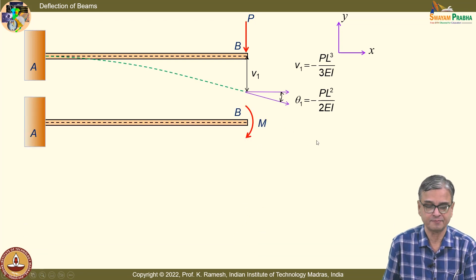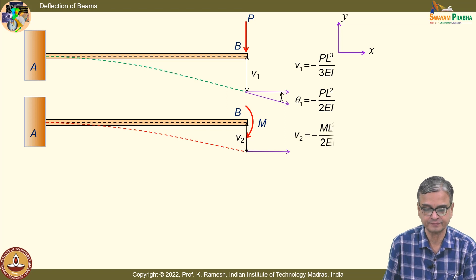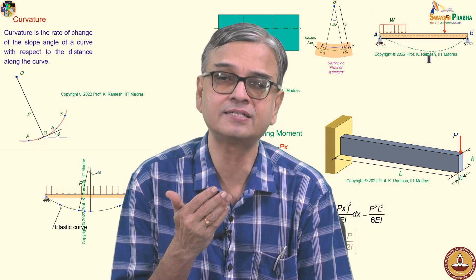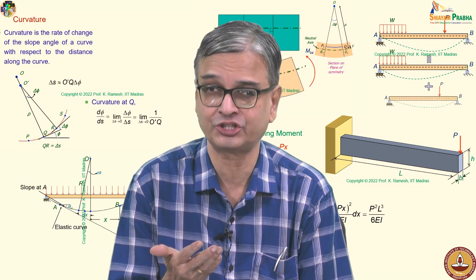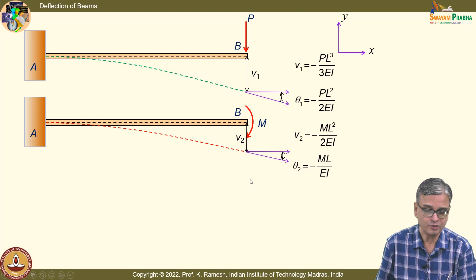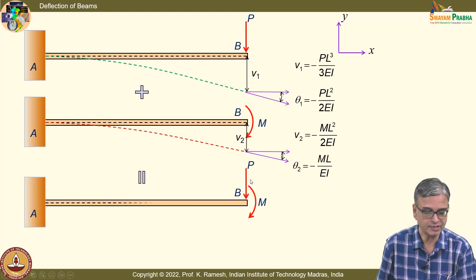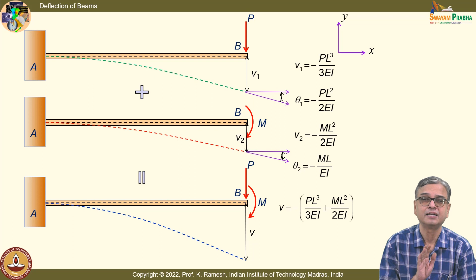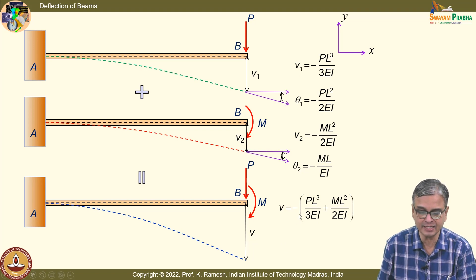We have also seen for a bending moment what is the value of V2 and theta2. When I have a combined loading, the principle of superposition says I can add them. For illustration purposes these deformations are shown very large, but in reality they are very small and you can comfortably add them to get the tip deflection and slope at the tip — simply the arithmetic addition of values from individual problems. So V becomes minus of PL³ by 3EI plus ML² by 2EI.